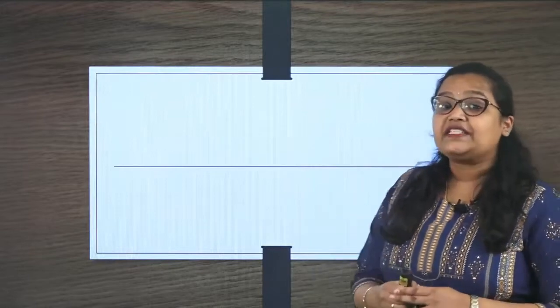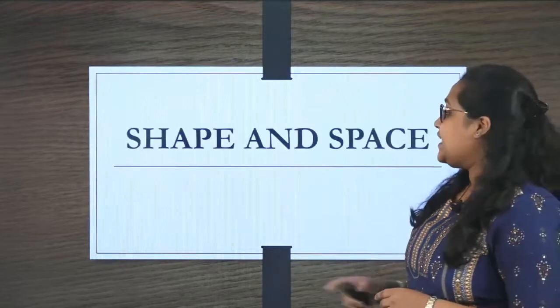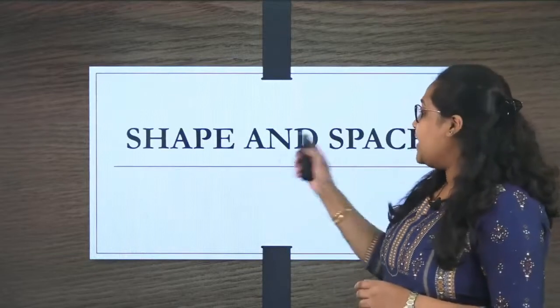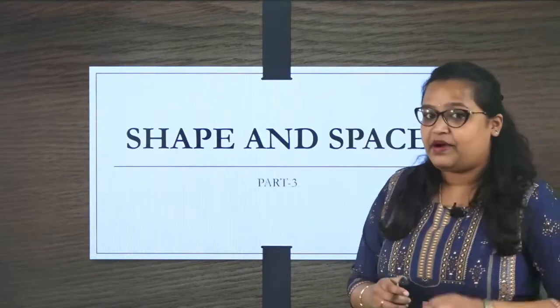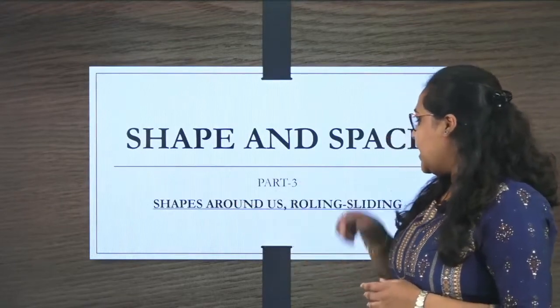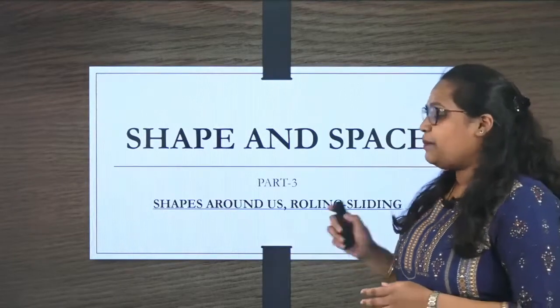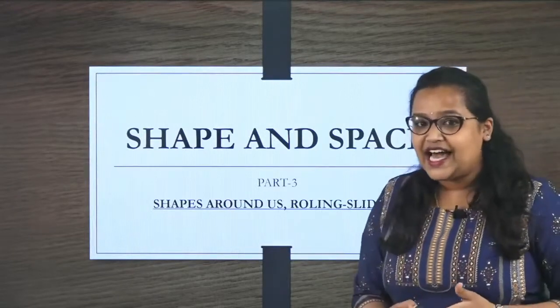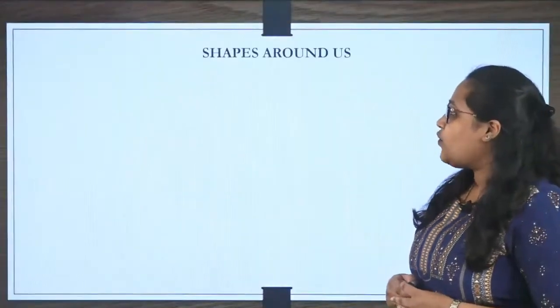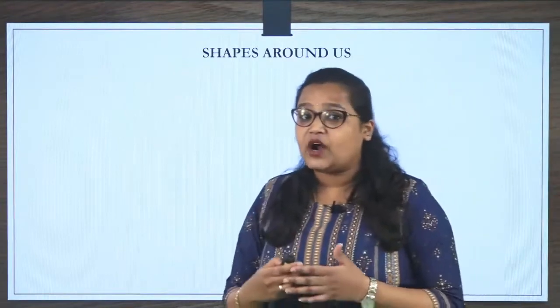So in the previous class, we have studied shapes and spaces, the second part. Today we'll be starting the first chapter that is shape and space and the third part, the last part. It is of shapes around us rolling and sliding. So today we'll be learning the two topics. Shall we start our class? First we'll be learning shapes around us. What are the shapes around us?